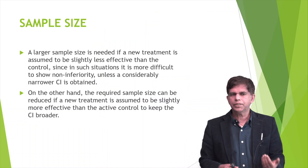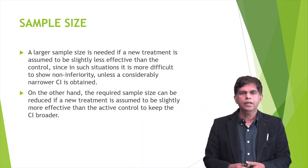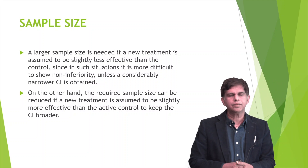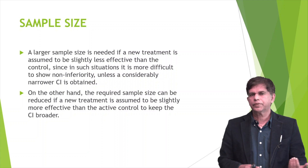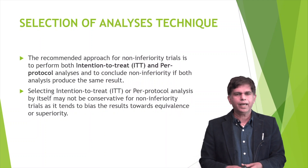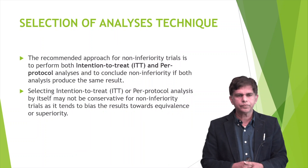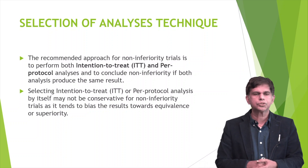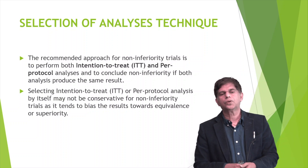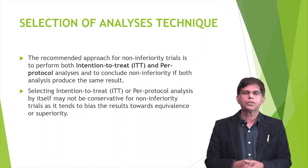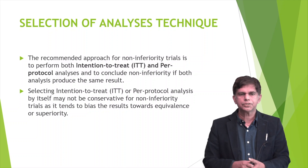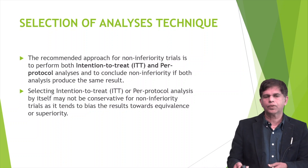Usually you need a larger sample size for this type of trial, though the required samples can be reduced if a new treatment seems to be slightly more effective than the active control, which also keeps the confidence interval broader. For selection of analysis, the recommended approach for non-inferiority trials is to do both intention-to-treat and per-protocol analysis. Selecting only intention-to-treat or per-protocol analysis may be conservative, as it tends to bias the results towards equivalence or superiority.